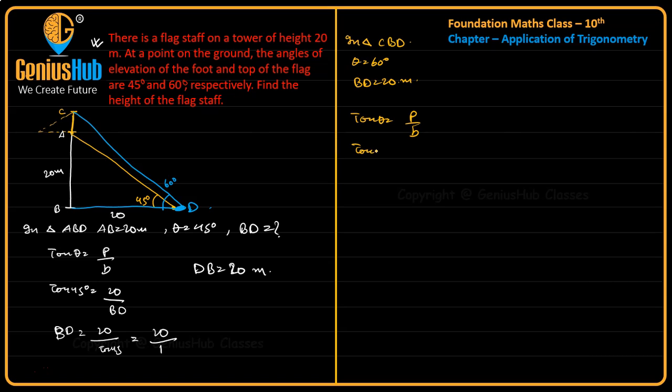So, tan 60 degree is equal to P, perpendicular we don't have. B we have, that is 20. So, P is equal to what? P means BA, let's do one thing. Instead of P let's write BA. So, BA is equal to tan 60 into 20.